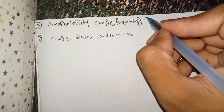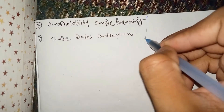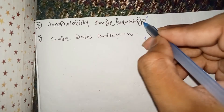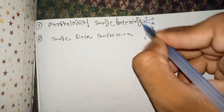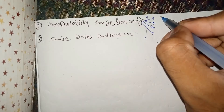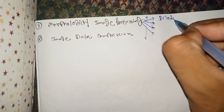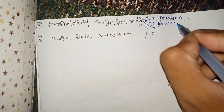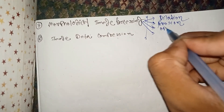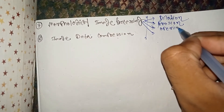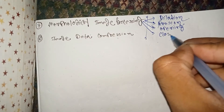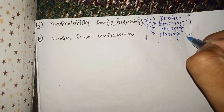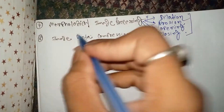Morphological Image Processing may be asked even though this chapter is rejected from the macro syllabus. Important topics include dilation, erosion, opening, and closing. Numerical questions can be asked from these portions. Image Data Compression does not need to be studied as it is rejected from the macro syllabus.